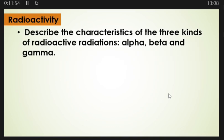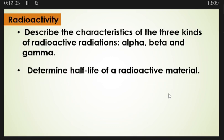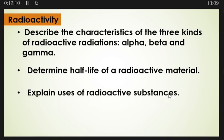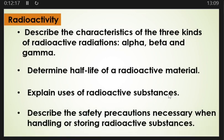From here you need to look at radioactivity. Under radioactivity, you need to describe the properties and characteristics of the three kinds of radioactive radiation — alpha, beta, and gamma. You must also be able to determine the half-life of a radioactive material, explain the uses of radioactive substances, and describe the safety precautions necessary when handling or storing radioactive substances.